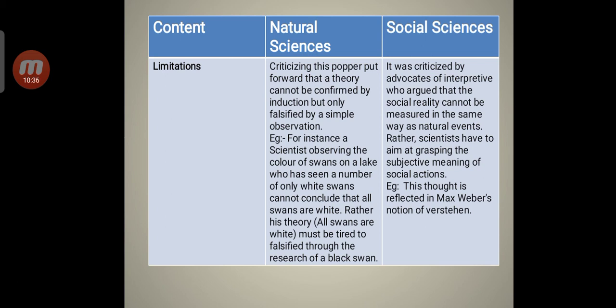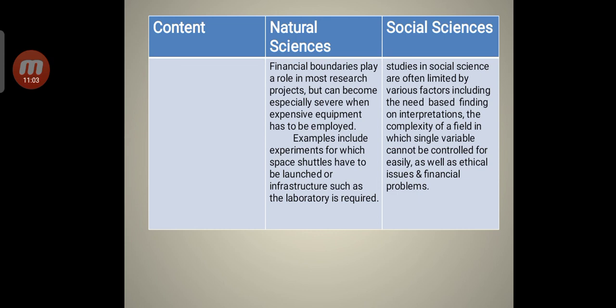In social sciences, it was criticized by advocates of interpretivism who argued that social reality cannot be measured in the same way as natural events. Rather, scientists have to aim at grasping the subjective meaning of social action. For example, this thought is reflected in Max Weber's notion of Verstehen. In natural sciences, financial boundaries play a role in most research projects but can become especially severe when expensive equipment has to be employed. Examples include experiments for which space shuttles have to be launched or infrastructure such as the laboratory is required. Studies in social science are often limited by various factors including the need-based finding on interpretations, the complexity of a field in which single variables cannot be controlled for easily as well as ethical issues and financial problems.